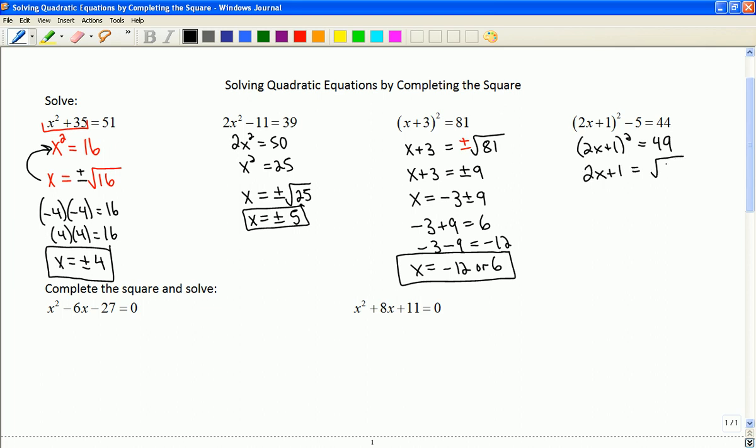2x plus 1 is going to be equal to 49. And again, writing it in a different color here, just to remind you, you don't want to forget that plus or minus root 49.